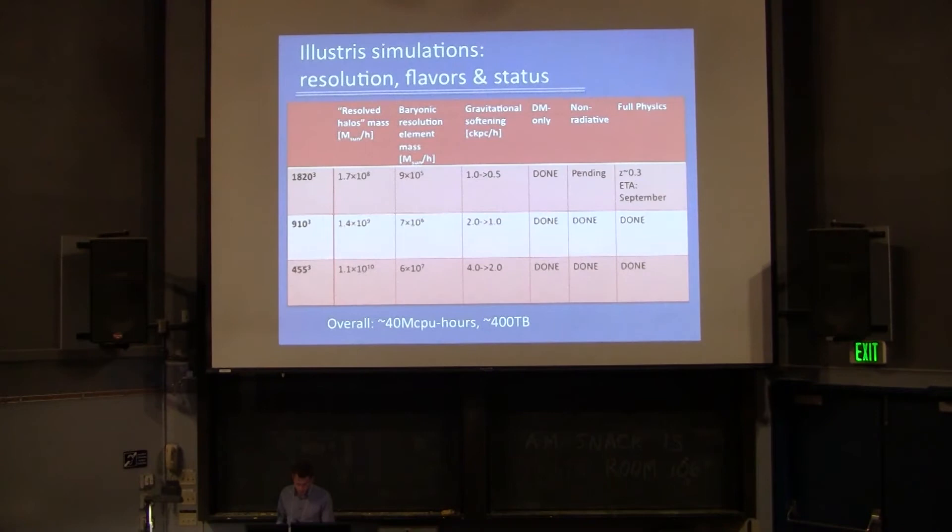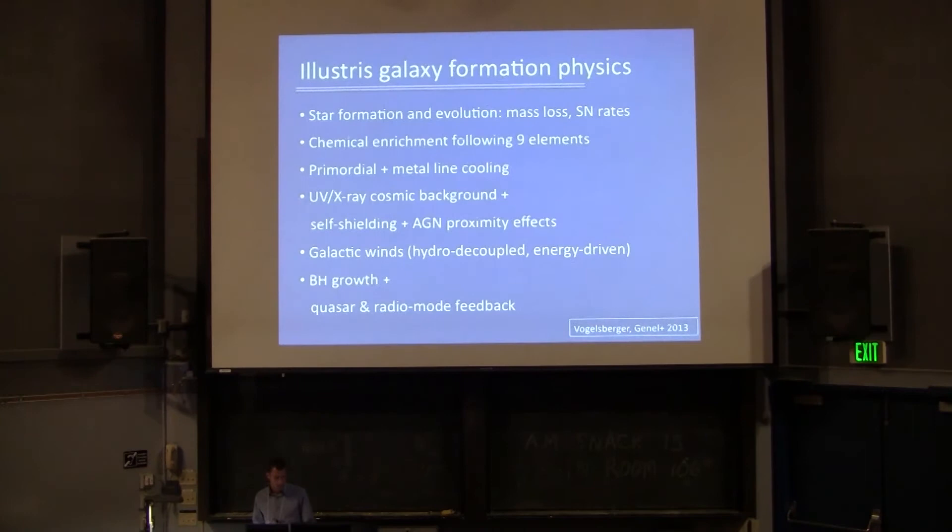To obtain this 1 kiloparsec resolution, we need to go to a very large simulation. We use 1820 cubed resolution elements. You can think of this as roughly a Millennium II simulation. It's a bit smaller in volume, a bit higher in resolution, but it's full hydrodynamics. We start to resolve halos of about 2 times 10 to the 8 solar masses. Our baryonic resolution is about 10 to the 6 solar masses. And spatial softening is half to 1 kiloparsec. We have lower resolution versions, which are already done. The big run, the full physics run, is currently running for a few months now. It will be finished in a few weeks. So the results I'm going to show you are based on smaller test boxes and the lower resolution versions of this run.